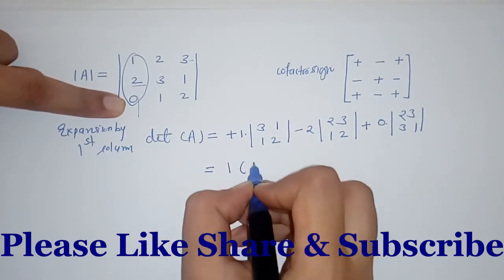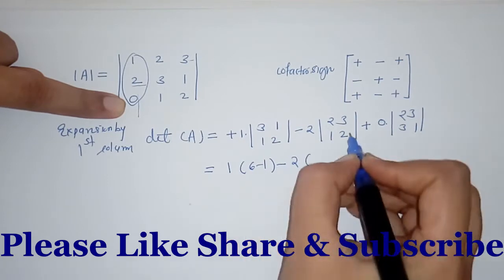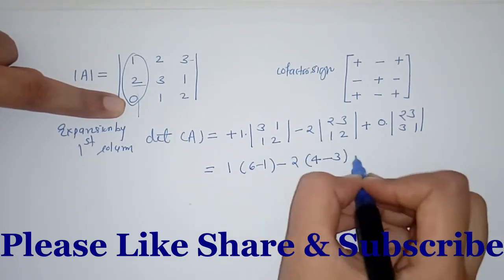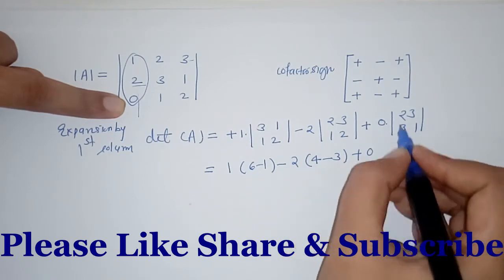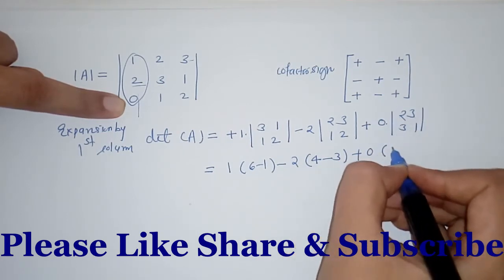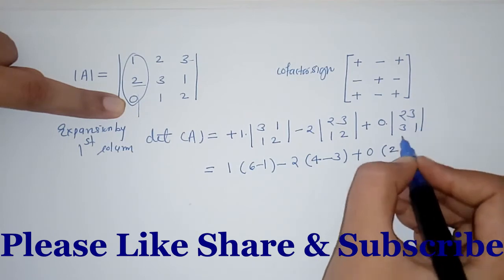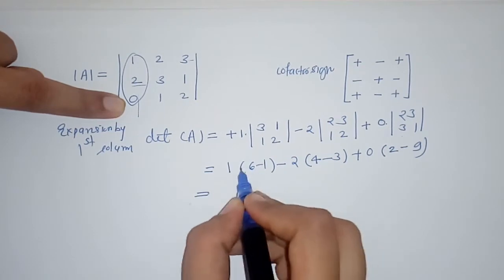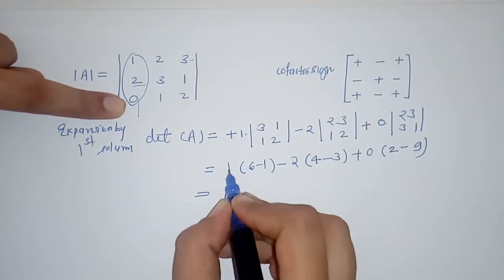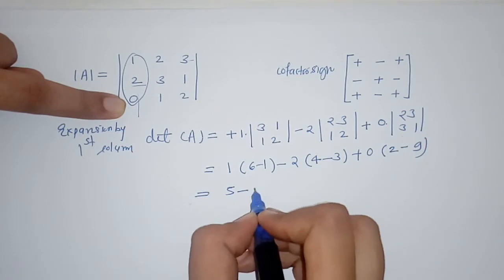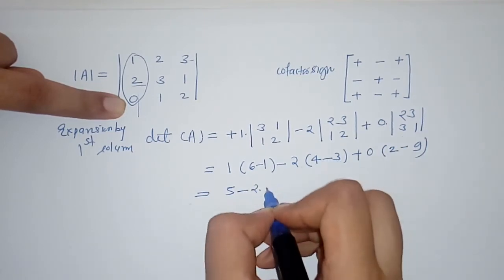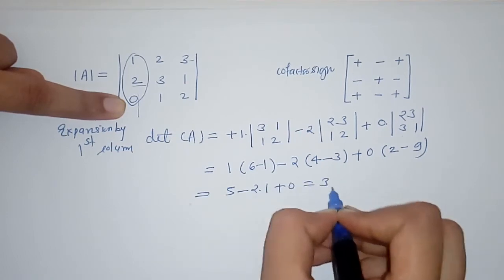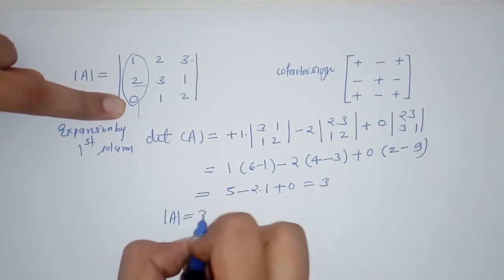Solving the first column expansion: first minor gives 6−1 = 5, second minor gives 4−3 = 1, and the third term is 0 times something = 0. So we get 1×5 − 2×1 + 0 = 5 − 2 = 3. The determinant by expansion by the first column is also 3.